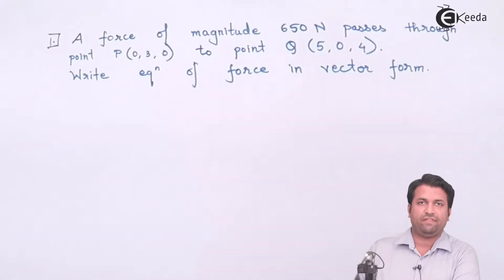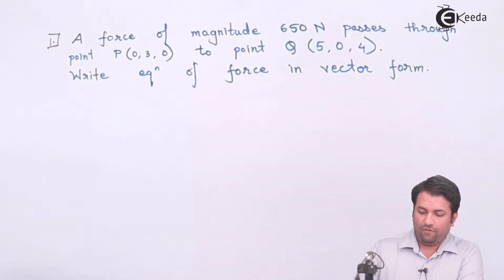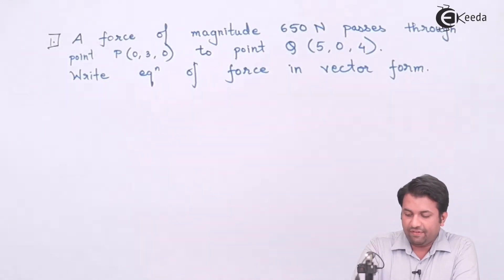So this is the question that we have here. A force of magnitude 650 Newton passes through point P, the coordinates being 0, 3, 0 and approaching the point Q, 5, 0, 4. We have to write the equation of the force to represent it in the vector form.